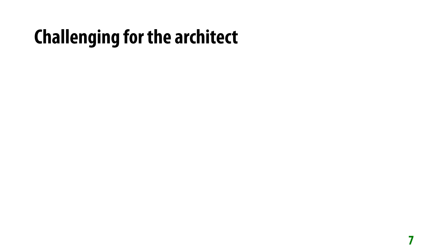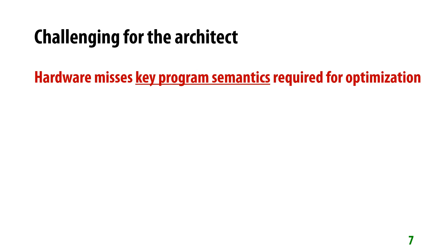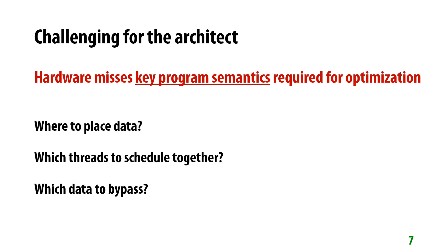For the hardware architect, on the other hand, it is again a challenging task, because hardware misses key program semantics required for optimizations. For example, it's hard for the architecture to know where to place data, which threads to schedule together, or which data to bypass.